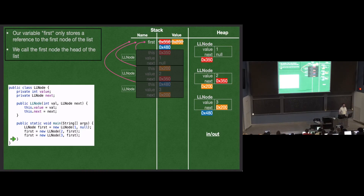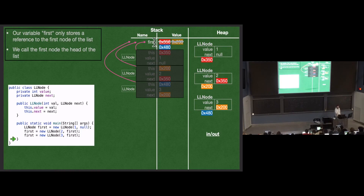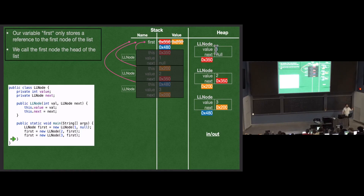How do you reference a previous variable — like those at addresses 350 and 200, which we no longer have directly on the stack? We would follow the next references. So if we did first.next.next.value, we could get the value 1. We use the next references to navigate the linked list and get to the value we're looking for.